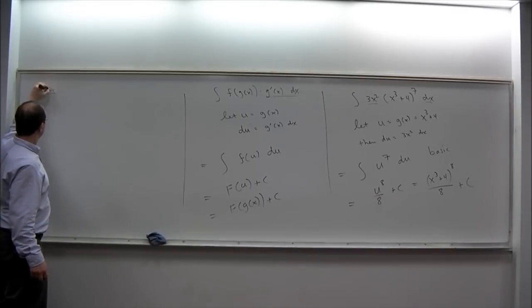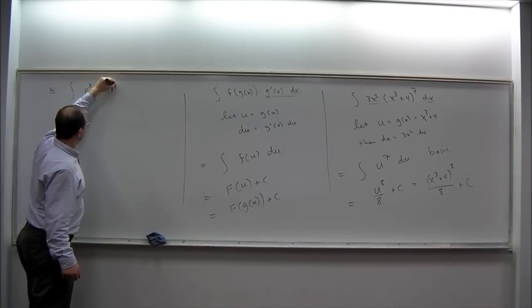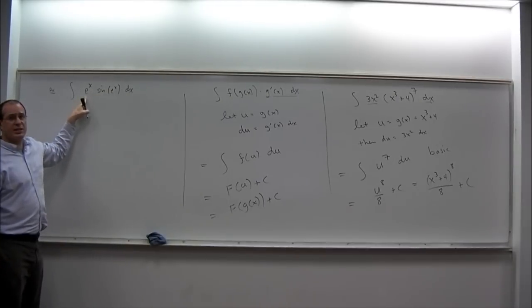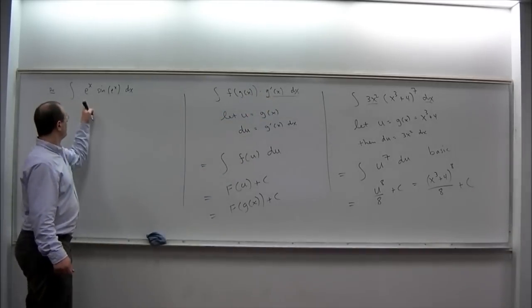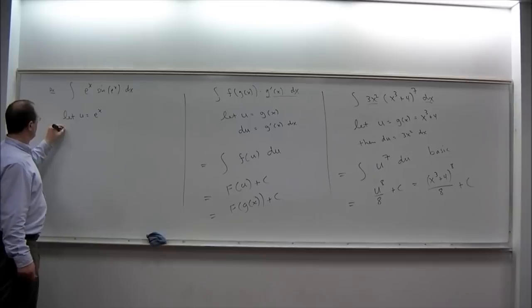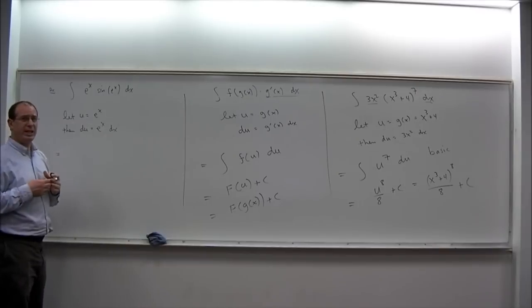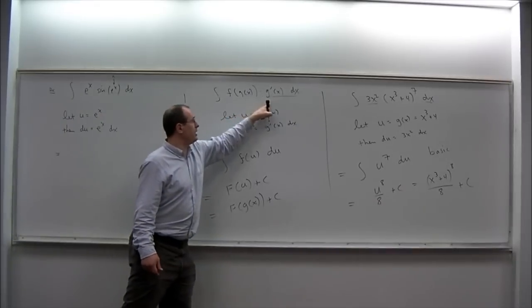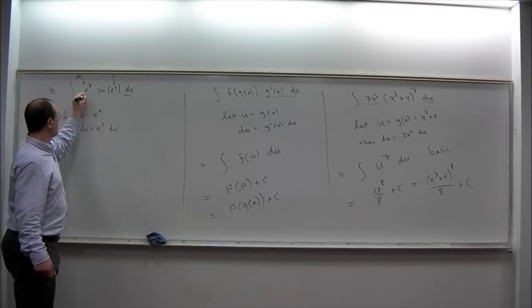As another example, suppose we have the integral of e to the x times the sine of e to the x. Here we have our composition, sine of e to the x, and e to the x is the derivative of the inside. So sine of e to the x is our composition, and times e to the x — that's the form F of G of x times G prime of x. So we let U equal e to the x, and then DU equals e to the x dx. This extra factor e to the x is the G prime of x, so in conjunction with dx, that's the DU.